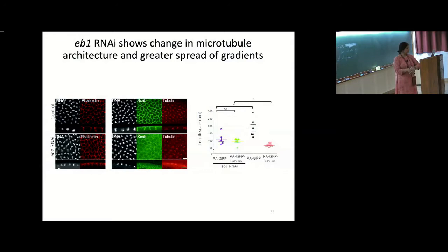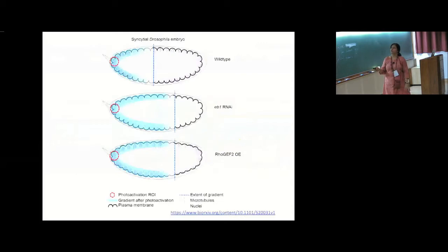The interest is in understanding that there is a change in viscosity and that limits the spread. This is a summary showing the control and the mutant: in the control, PA-tubulin has a certain length scale of spread, and in the tubulin mutant with less polymerization of microtubules, this length scale increases and becomes equivalent to PA-GFP. So the difference in PA-GFP and PA-tubulin basically goes away in the tubulin mutant.